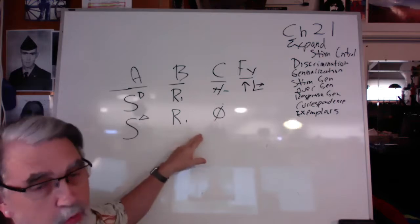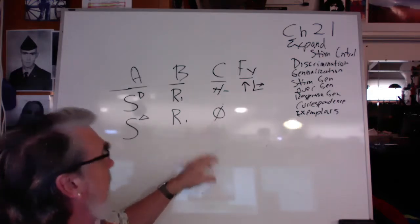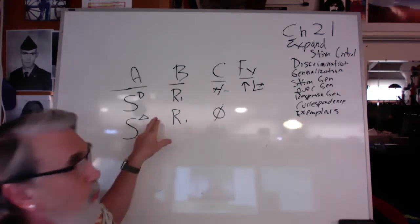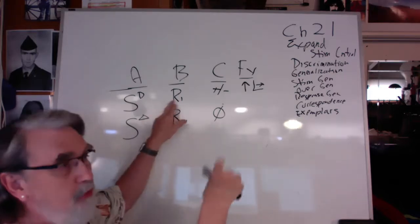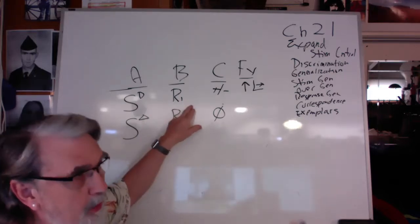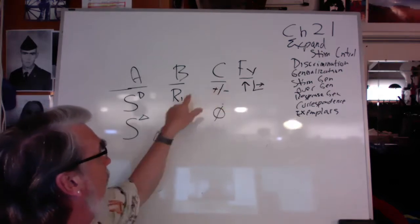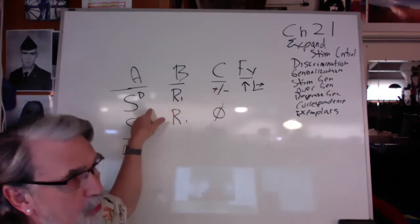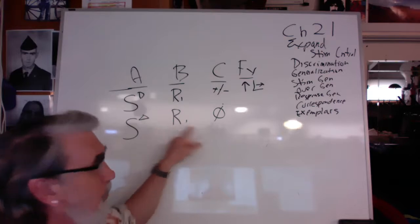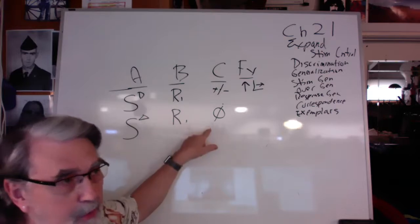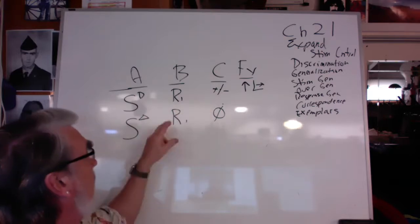Discrimination training might look like this: if I want to teach a child to identify the color red, I'll present red, say 'touch red,' the child touches red, I say 'yes, good, correct, that's red, here's a sticker' — I reinforce correct responses to red. When I put other colors there and the child touches some other color, I say 'no, try again' and I don't reinforce it.